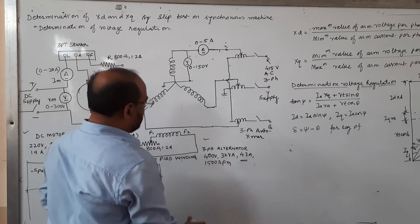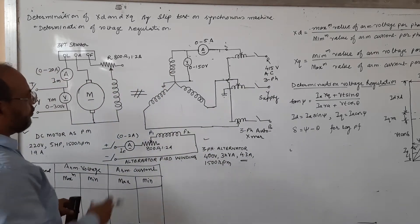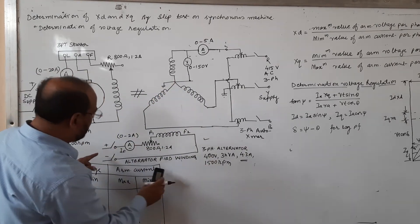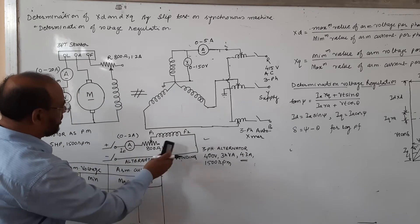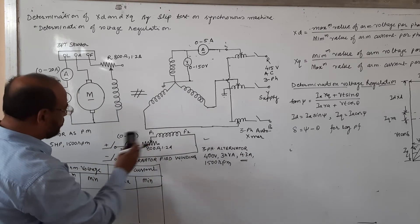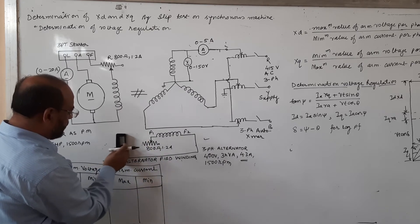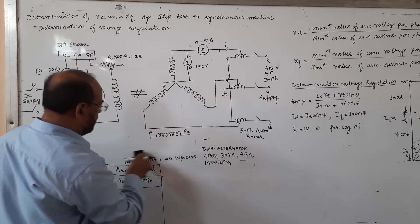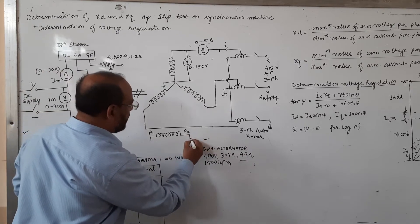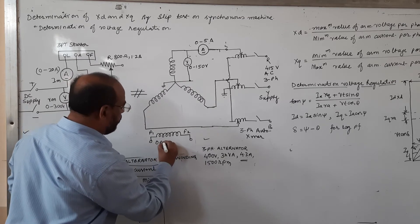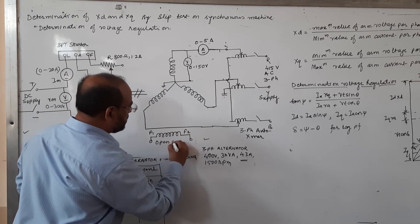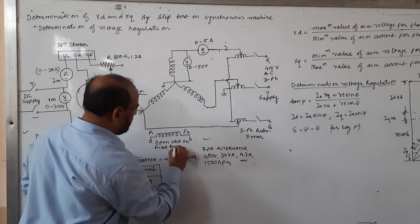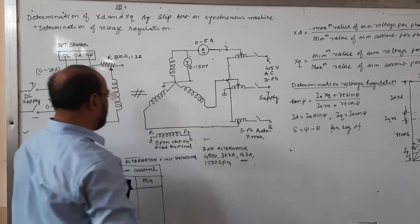In this practical setup, the excitation is kept open — we are not providing any supply to the field winding. So it is represented as an open circuit. The field winding is kept open, meaning there is no excitation: the field terminals are open circuit.